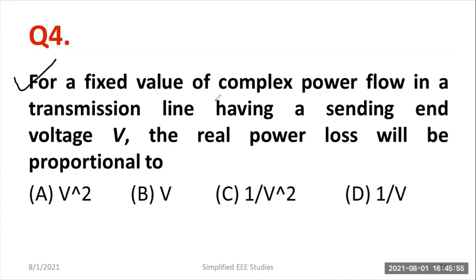Very important. For a fixed value of complex power flow in a transmission line, having a sending end voltage V, the real power loss will be proportional to. First of all, you have to know about complex power. S is equal to V I*. So that is called a complex power. You can represent it as P plus jQ. That is equal to S complex power, where P is known as real power and Q is known as reactive power. Now, I wanted to separate the value of I. So let me separate the value of I.